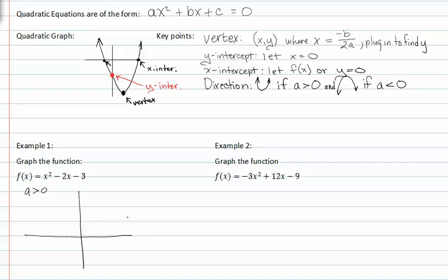If we want to find the vertex, we can use -b over 2a, which is equal to 2 over 2 times 1. So our vertex is equal to 1.